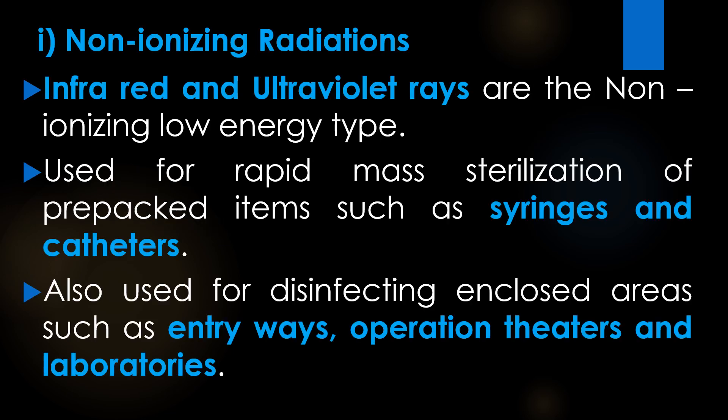The first type is non-ionizing radiation. Infrared rays and ultraviolet rays are examples of non-ionizing radiations. They are low-energy types of radiation. These non-ionizing radiations are used for rapid mass sterilization of pre-packed items such as syringes and catheters, and also for disinfecting enclosed areas such as entryways, operation theatres, and laboratories.